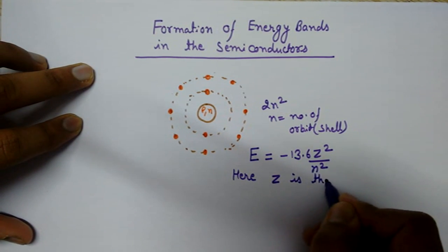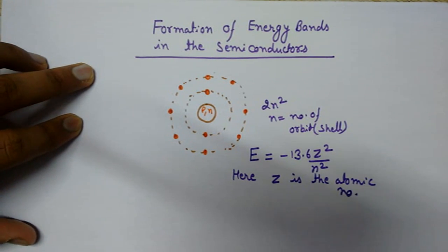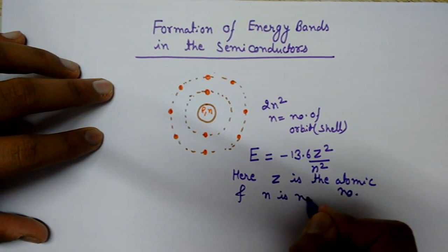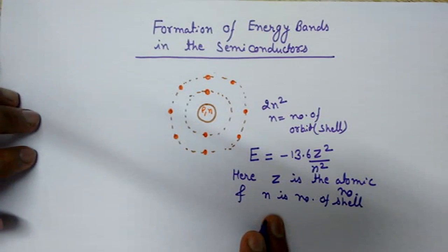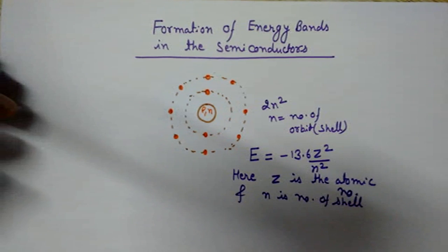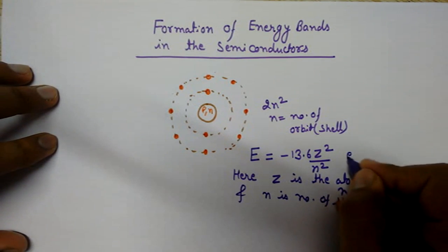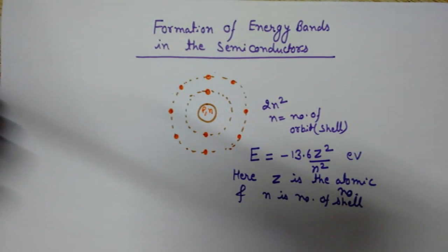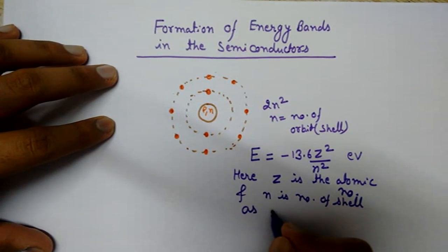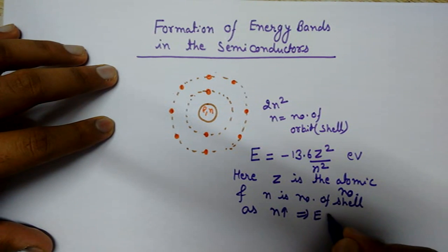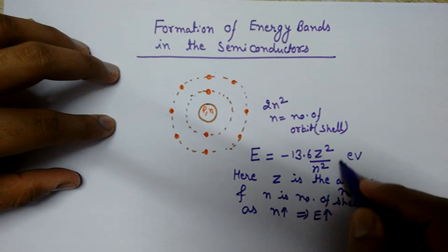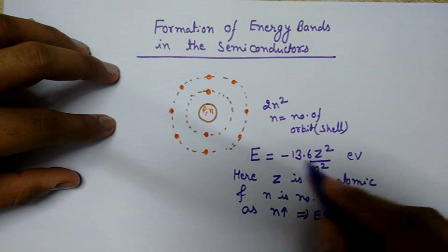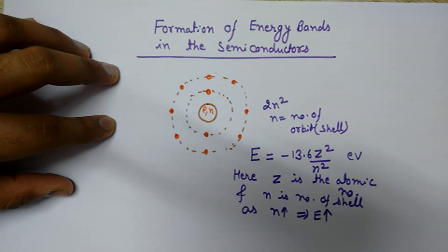Here Z is the atomic number and n is the number of the shell. The unit is electron volts. As n increases, energy also increases — because as n increases, the magnitude decreases, making it less negative, so ultimately energy increases. So with increasing n, energy E increases.